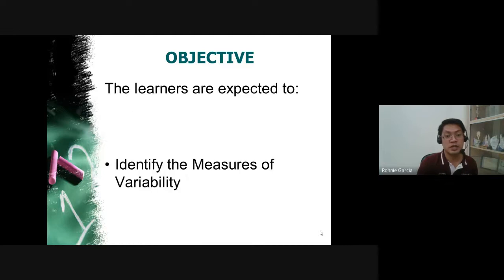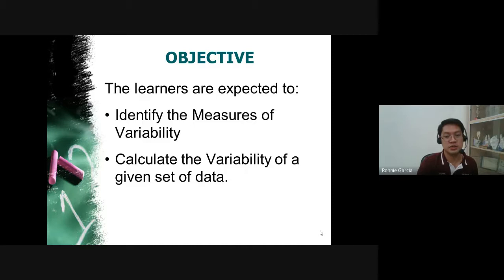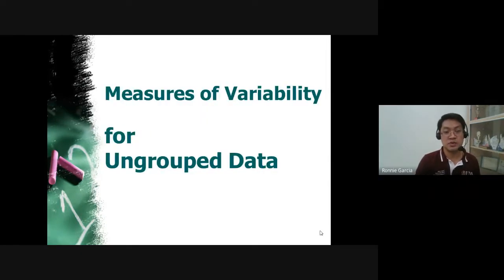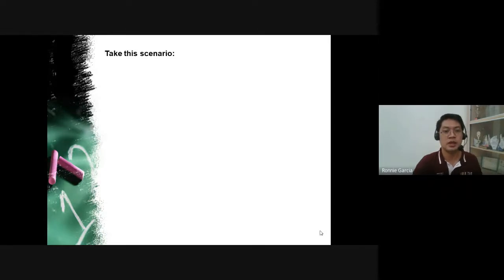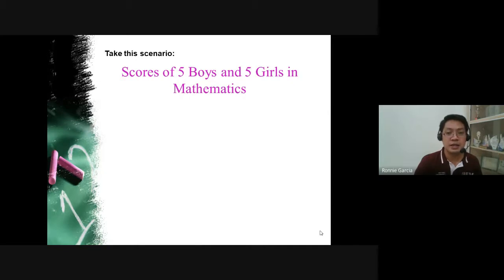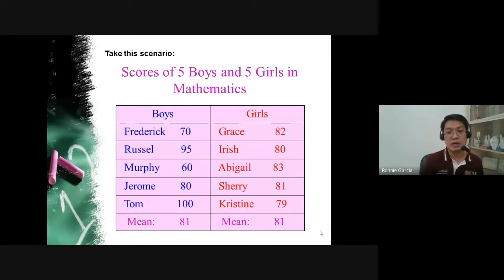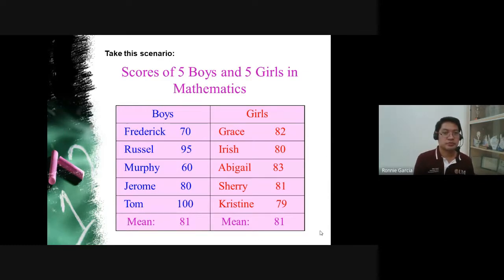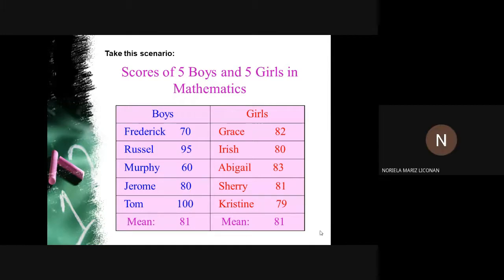For this afternoon, our objective is to identify the measures of variability and to calculate them. There are also two kinds: grouped data and ungrouped data. For the examination, only ungrouped data will be included. To understand the difference between measures of central tendency and measures of variability, consider the scores of boys and girls in math — what can you observe?